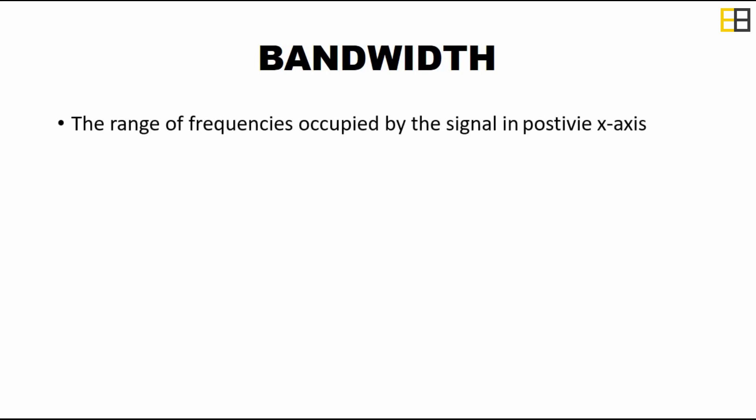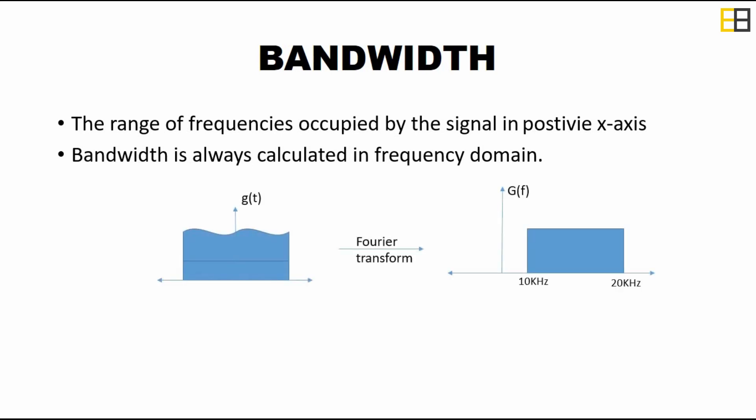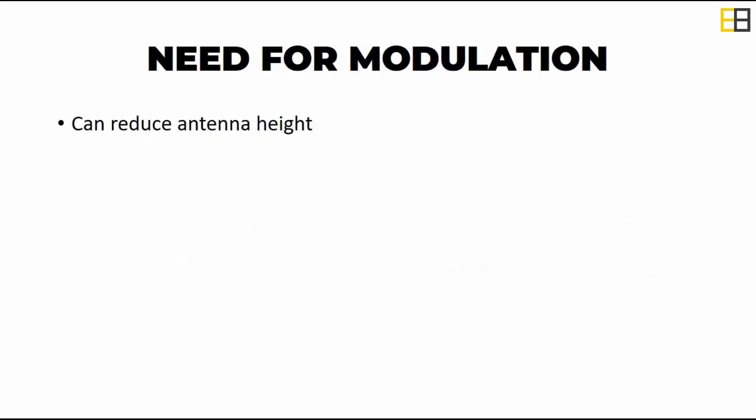Bandwidth is the range of frequency occupied by the signal in the frequency domain. Now let us consider an example where a signal g(t) is converted into the frequency domain and bandwidth is measured. Then going on to the need for modulation: firstly, modulation helps to reduce the antenna size.